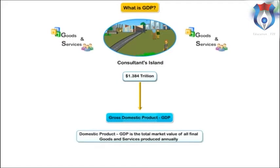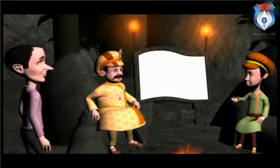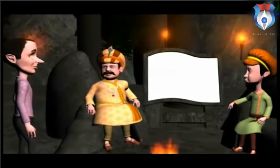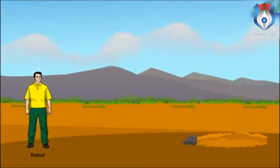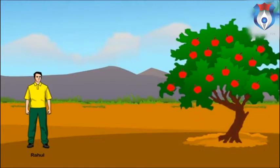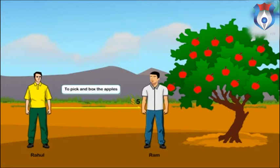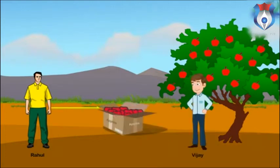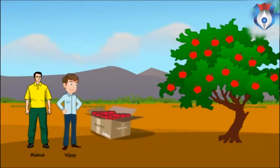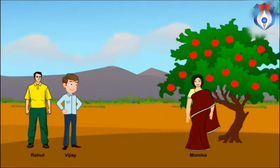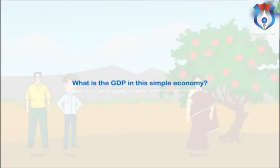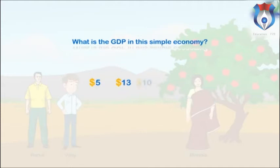Simply put, gross domestic product (GDP) is the total market value of all final goods and services produced annually within a country's borders. Consider a simple economy in which one good is produced and sold. Rahul finds an apple seed, plants it, and an apple tree appears. Rahul pays Ram $5 in wages to pick and box the apples. Rahul then sells the apples to Vijay for $8. Vijay turns the apples into apple juice and sells it to Monica for $10. Monica consumes the juice. What is the GDP in this simple economy — is it $5, $13, or $10?